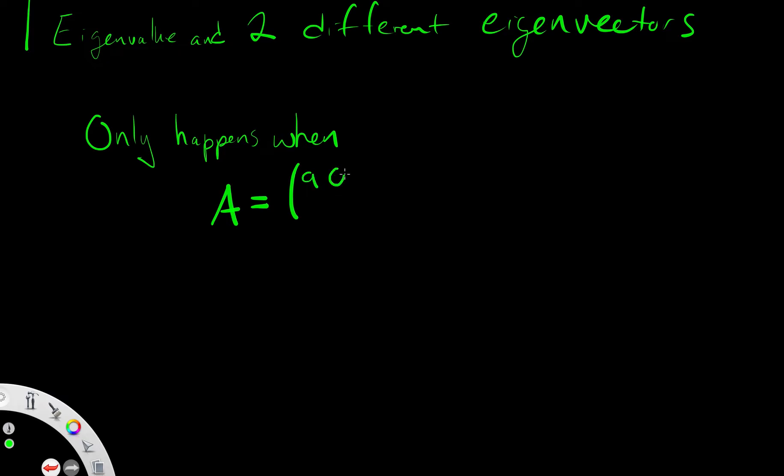A, 0, 0, A. When the matrix looks exactly like that where we have constants along the diagonal terms, then A is the eigenvalue and all vectors are eigenvectors.